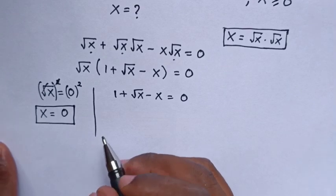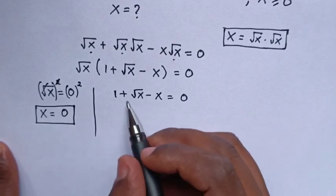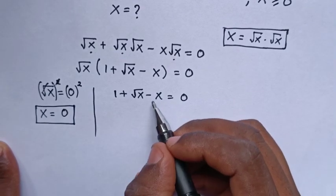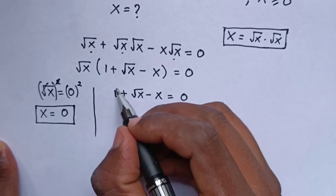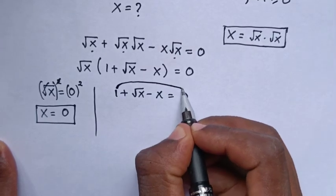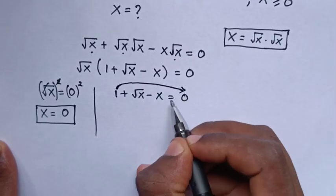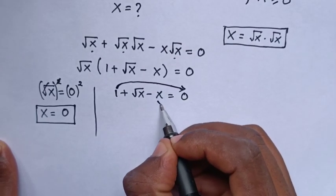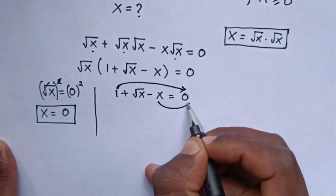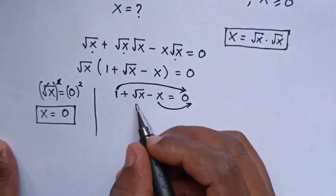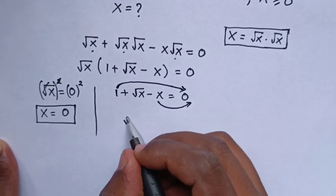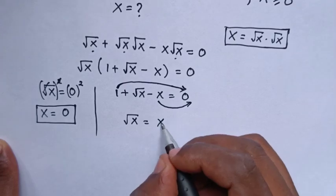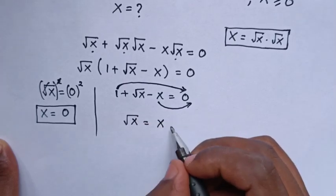For the other value of x, from the second case 1 plus square root of x minus x equals 0, we take 1 to the right side and the negative x to the right side, so our equation becomes square root of x equals x minus 1.